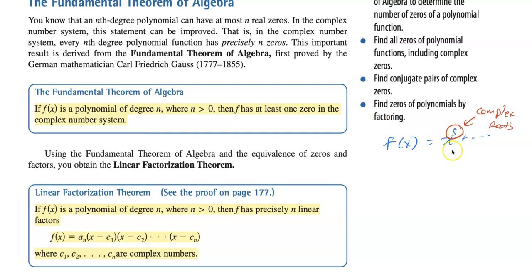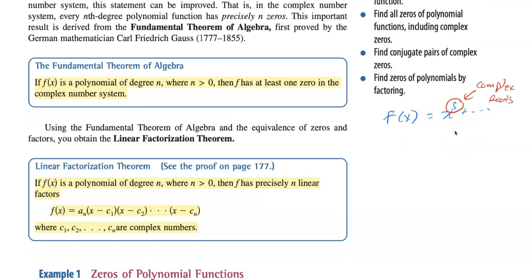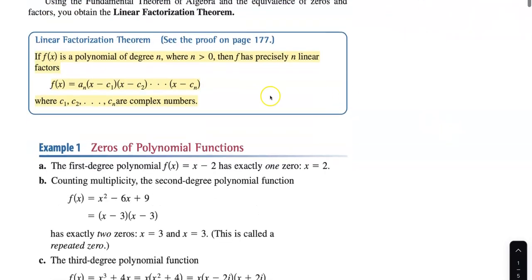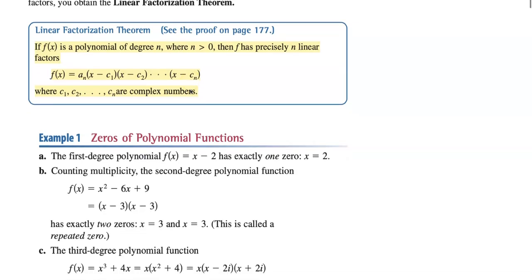So if you're solving a polynomial function, whatever the highest power is, that's how many complex roots you have. That's what the linear factorization theorem is saying — you could factor it linearly to get all these complex roots.